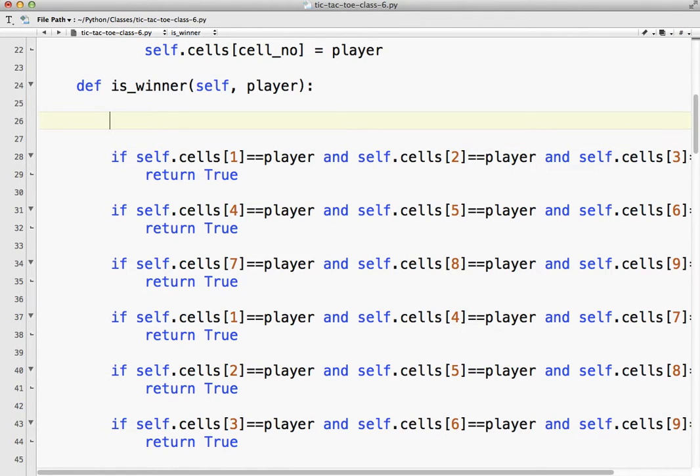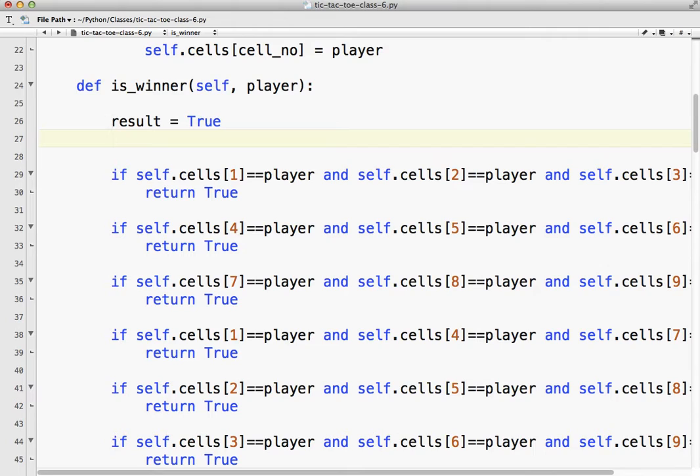Okay, so basically we want to find the result. So is this a win? Is this a loss? So true or false? So what we're going to do is we're going to say, we're going to assume the result is true. Okay, and then what we've got to do is we've got to confirm it. Okay, so for cell number in 1, 2, 3.